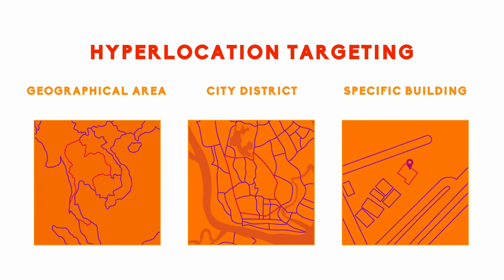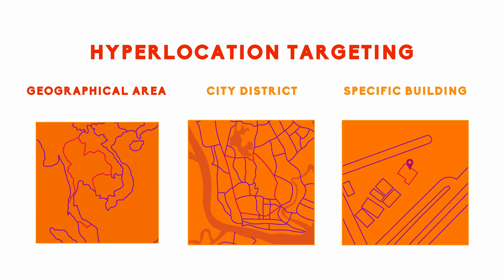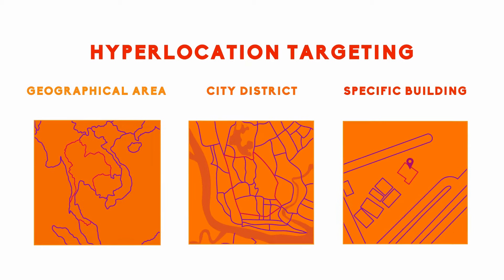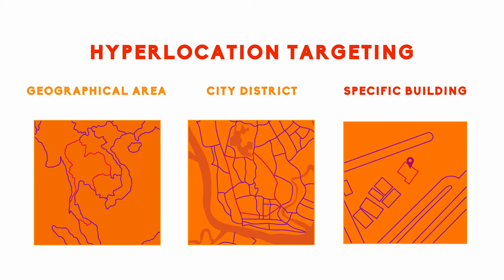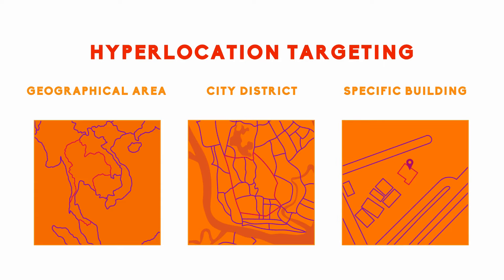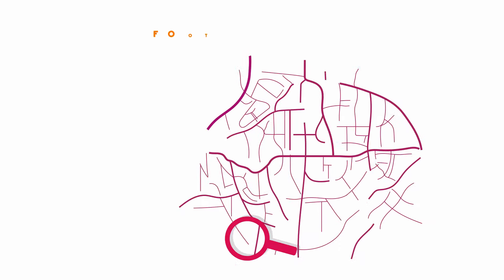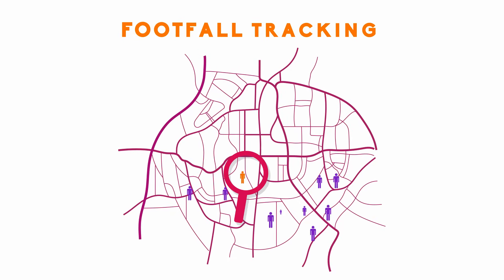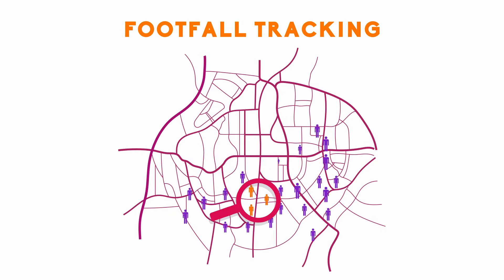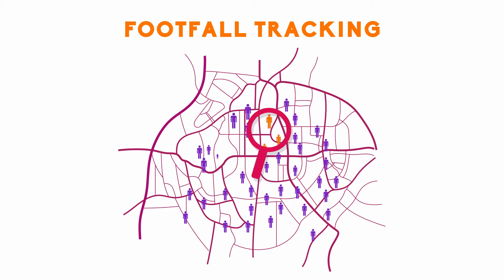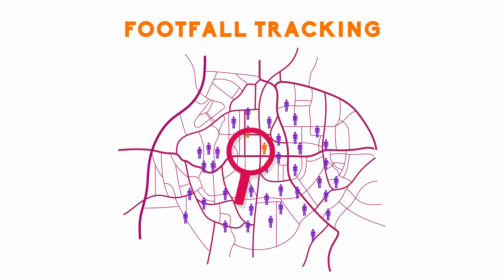With Eskimi DSP, you can target your ads to users in geolocations relevant to where you do your business, like a geographical area, city district, specific building, or any shape on a map. And measure how many users who viewed your ad via Eskimi DSP visited your business's physical location with footfall tracking.